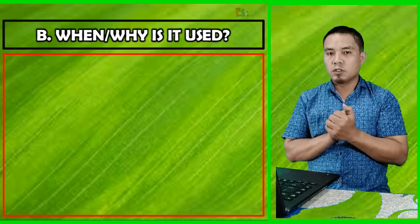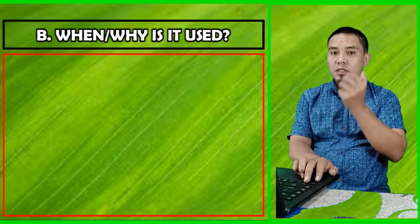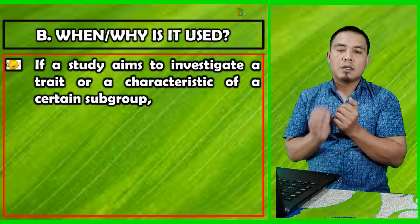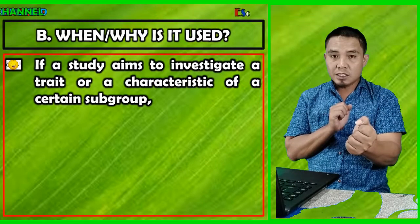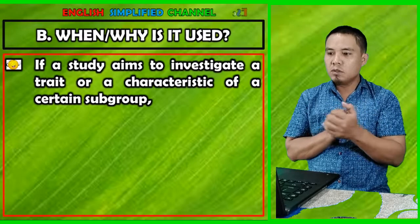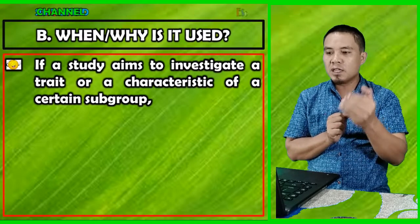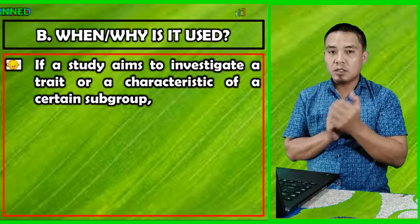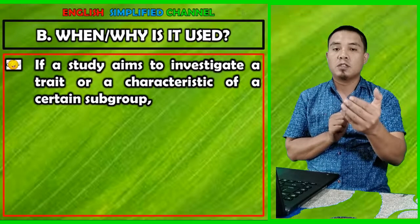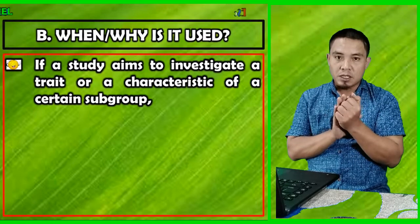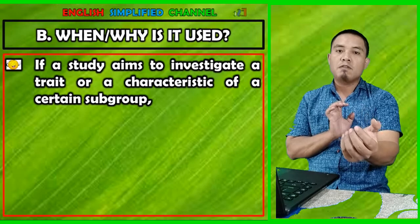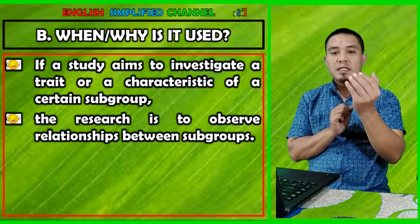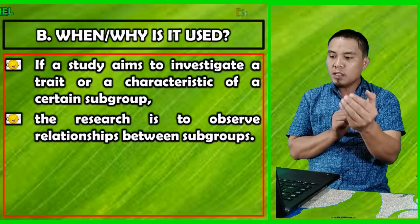When and why is quota sampling used? It is used when your research aims to investigate a trait or a characteristic of a certain subgroup. For example, students in our case — we divide them in terms of levels or age.